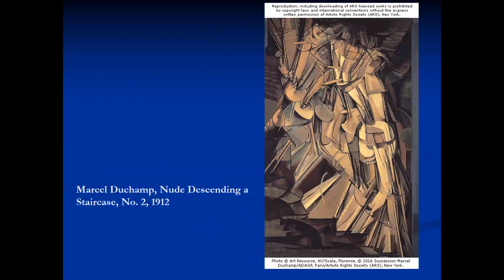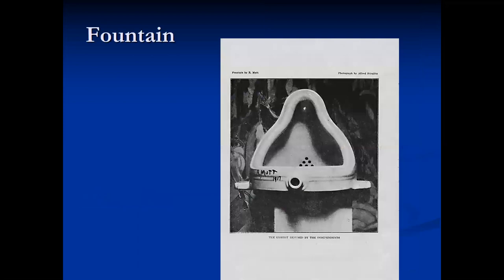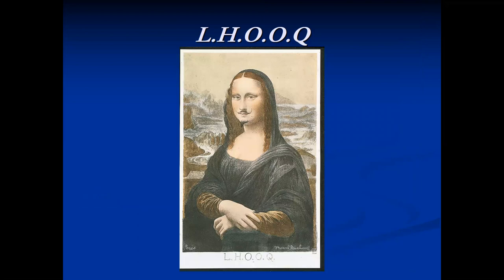Duchamp's pre-Dada work, Nude Descending a Staircase No. 2 in 1912, caused a sensation. The abstract depiction of a figure on an off-balance staircase contrasted with the more traditional realistic depictions from the late 19th century. In 1917, Duchamp submitted a work to be exhibited in a New York gallery — he took a urinal, turned it on its side, signed it R. Mutt, and titled it Fountain. The gallery denied his submission, declaring it a useful object but not art. Another Duchamp ready-made is his 1919 L.H.O.O.Q., a postcard of the Mona Lisa on which he added a mustache and a goatee. The title is a pun — in French, the letters sound like the phrase 'there is a fire down below.'